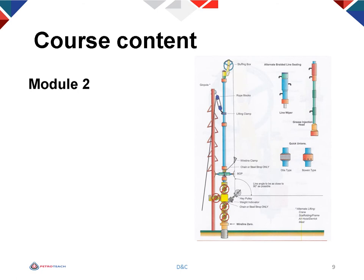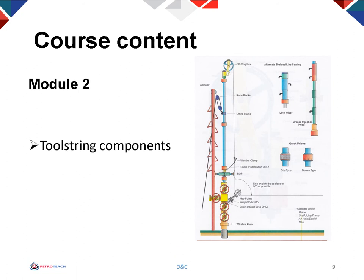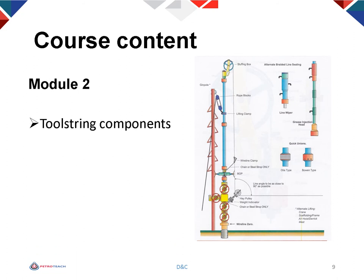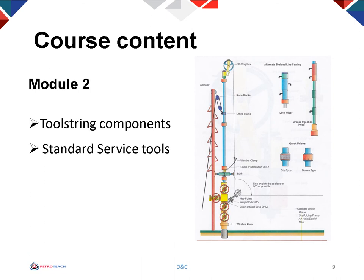In module 2, we'll discuss tool string components including swivel joints, stems, jars, knuckle joints and threaded connections. We'll also discuss the standard service tools such as the gauge cutter, blind box, impression block, swaging tool, tubing end locator, pulling tools and lock mandrels.